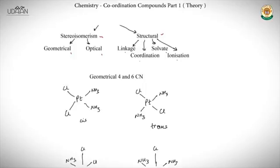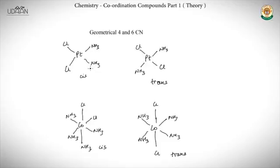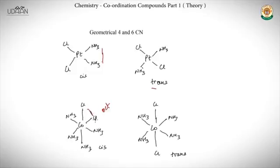Geometrical isomerism occurs in four- and six-coordinate compounds. In a square planar compound, the cis form has identical ligands on the same side and the trans form has them on opposite sides. In an octahedral compound, the cis isomer has two chlorine atoms adjacent to each other, while in the trans isomer they are on opposite sides of the plane.